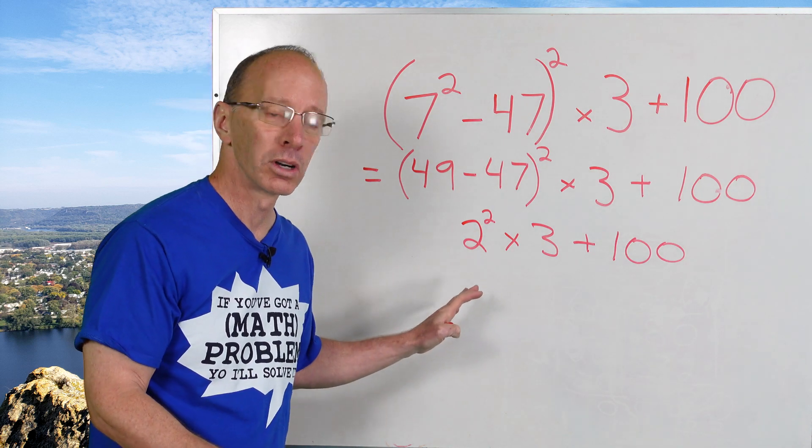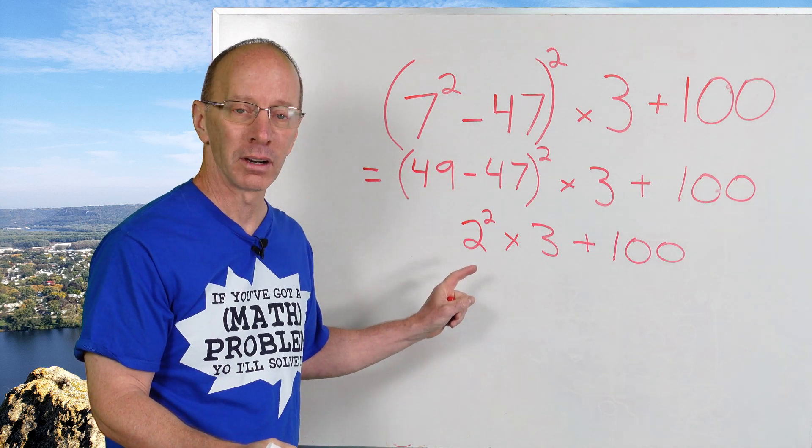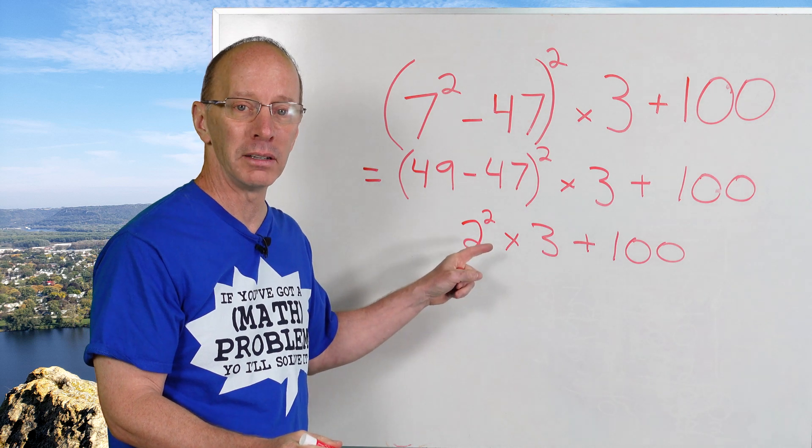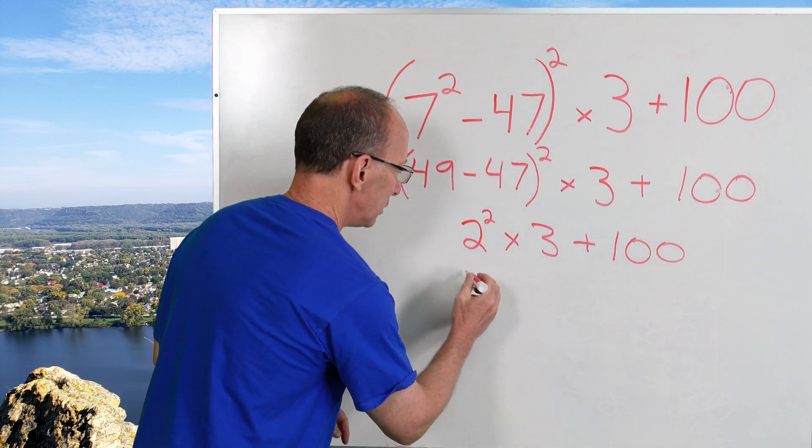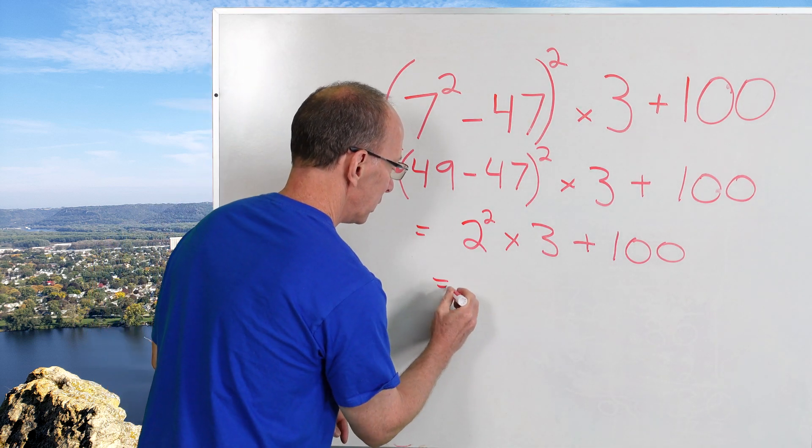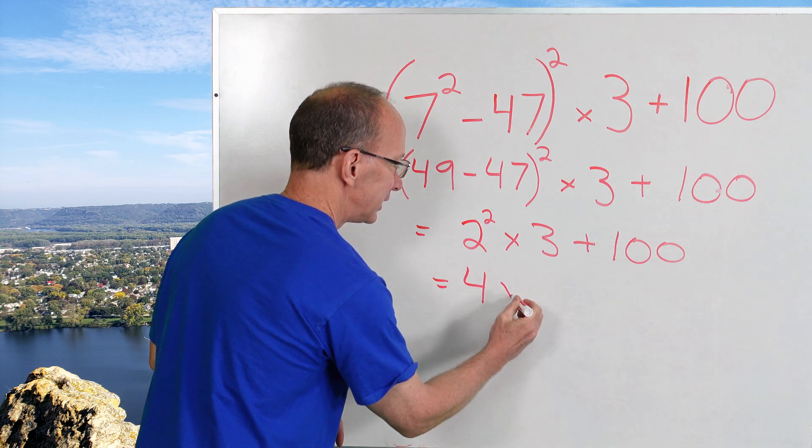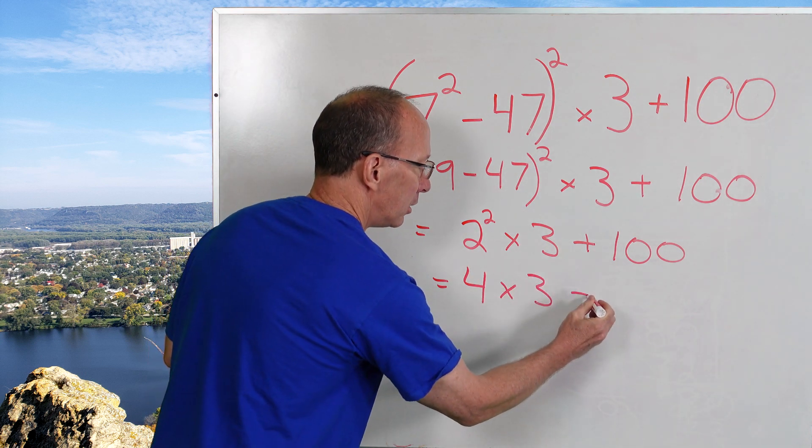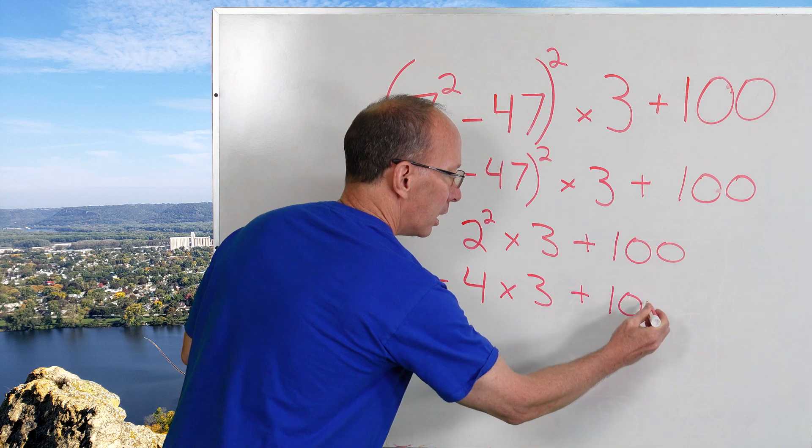Now I'm going to work with my exponents. So 2 to the second power would be 4. So go ahead and put 4 right here times 3 plus 100.